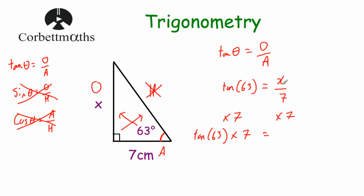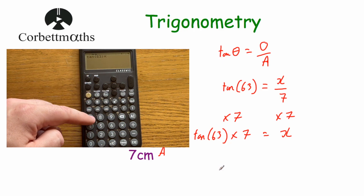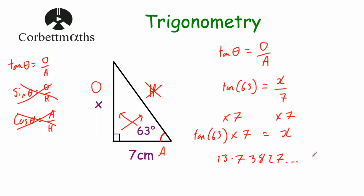On the right-hand side, x divided by 7, multiplied by 7, leaves just x. So we know x equals tan(63) multiplied by 7. Typing that into our calculator: tan(63) × 7 = 13.73827... Rounding to two decimal places, x = 13.74 centimetres. So the length of this side is 13.74 centimetres to two decimal places.